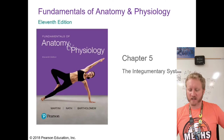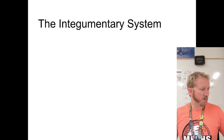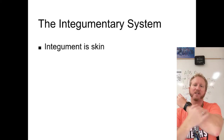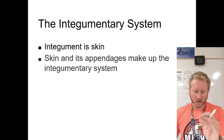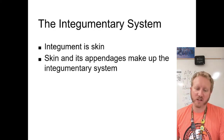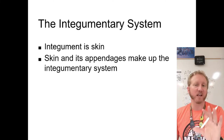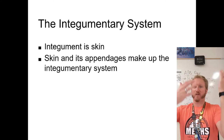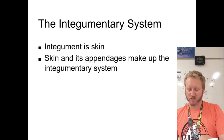Our very first organ system is the one that's most visible but perhaps least understood — the integumentary system. The integumentary system is the skin — the outside covering of our bodies, along with its appendages. When we think of appendages we usually think of arms and legs, but it goes a little deeper than that.